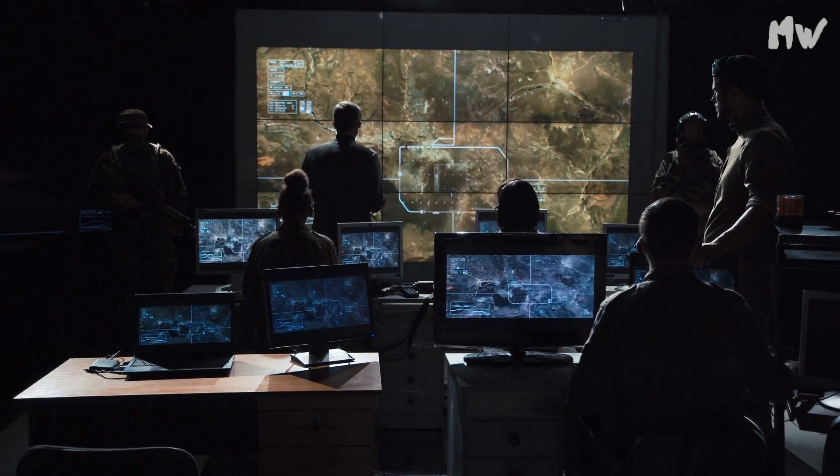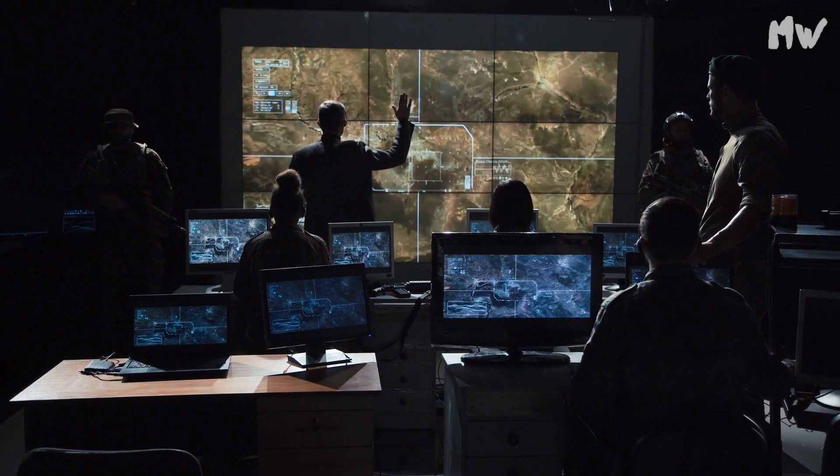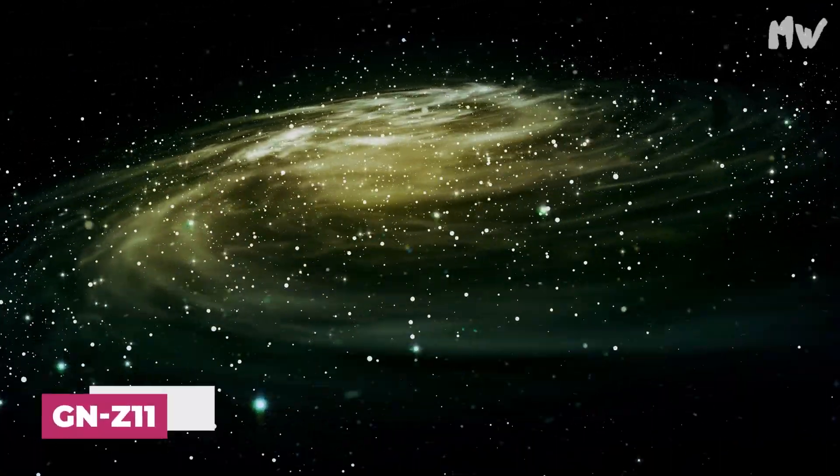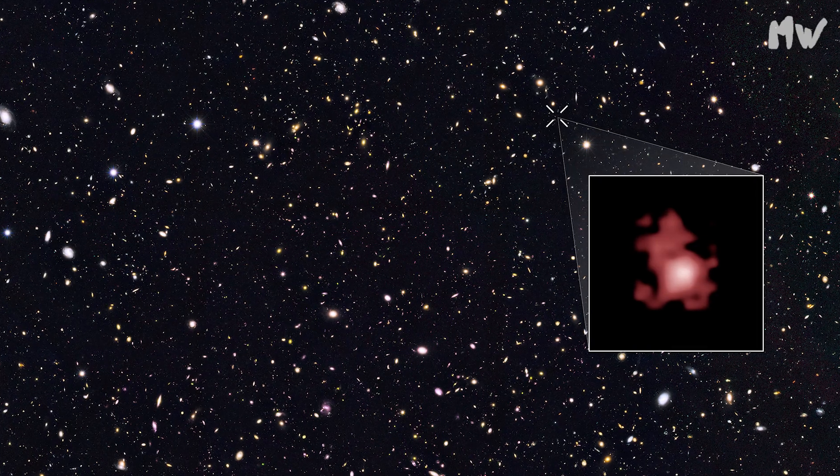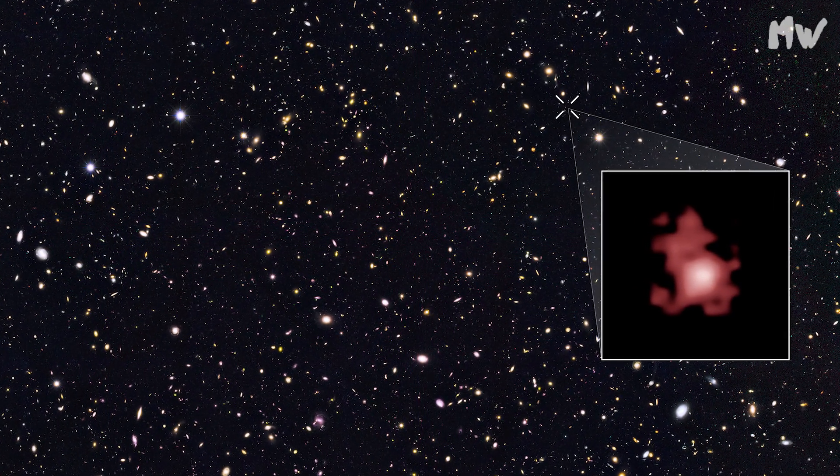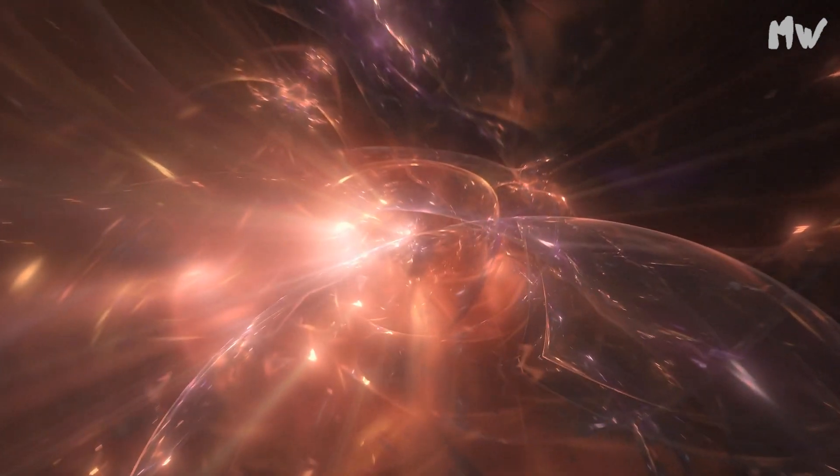Before the James Webb Telescope was launched, the most distant galaxy that was confirmed was one known as GN-Z11. According to astronomers, this galaxy was about 420 million years old after the Big Bang. This meant that it had a redshift of 11.6.